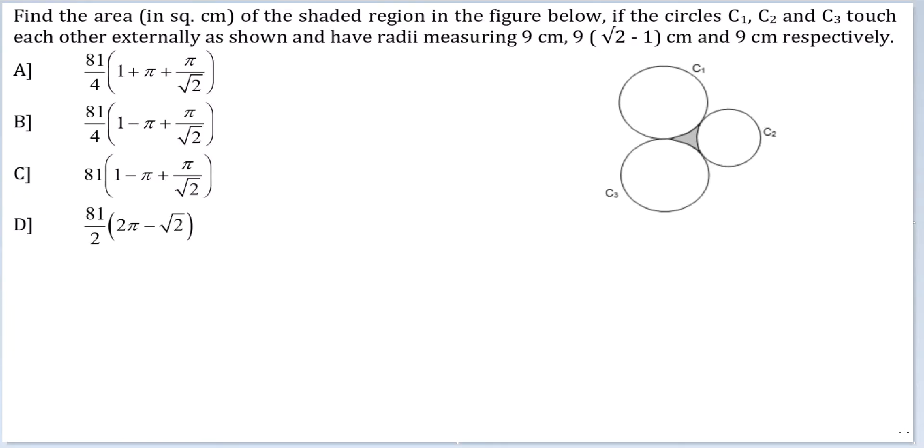Let's look at this question. Find the area of the shaded region in the figure below if the circles C1, C2 and C3 touch each other externally as shown and have the radii measuring 9, 9 root 2 minus 1, and 9 cm respectively.